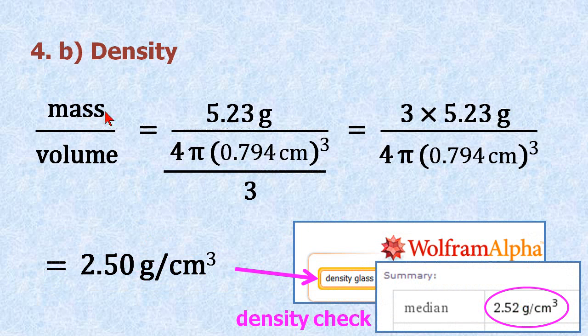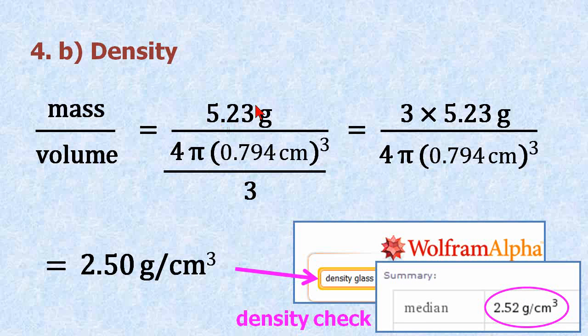For density, I take the original average mass of a marble, 5.23. I take the volume calculation I just performed. I take one number, divide it by the other, and I get an answer of 2.54 grams per centimeter cubed.